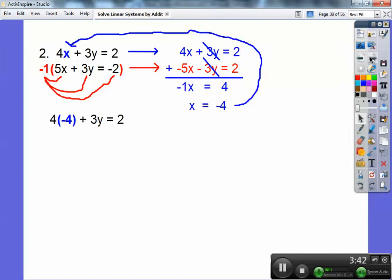So 4 times negative 4 plus 3y equals 2. Negative 16 plus 3y equals negative 2. And then we're going to add 16. Don't forget, we add 16. A lot of kids want to subtract 16. And sometimes your teacher does too. But just watch out. You've got to add the opposite. So 3y equals 18.